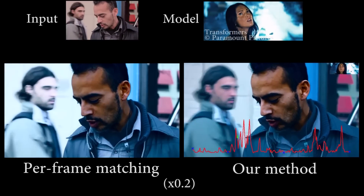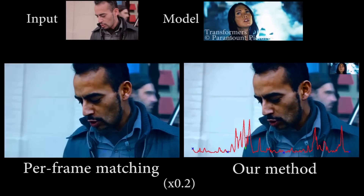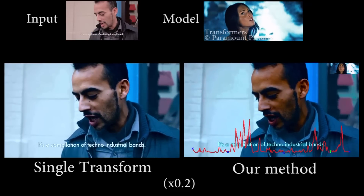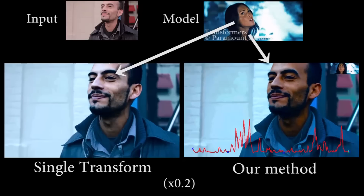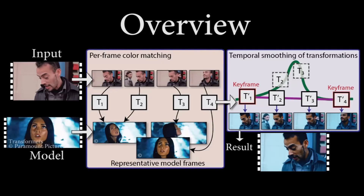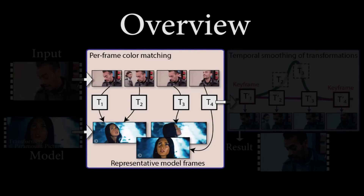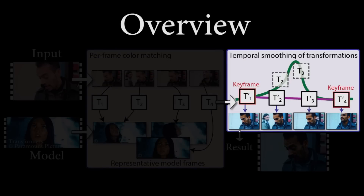Instead, we propose a technique that lies between these two extreme cases. We compute per-frame color transformations and filter them to ensure that the resulting transformations are temporally coherent when applied to the input video. We proceed in two stages: first computing color transformations for each frame, then filtering them to avoid abrupt changes while appropriately placing keyframes using a novel curvature flow technique.